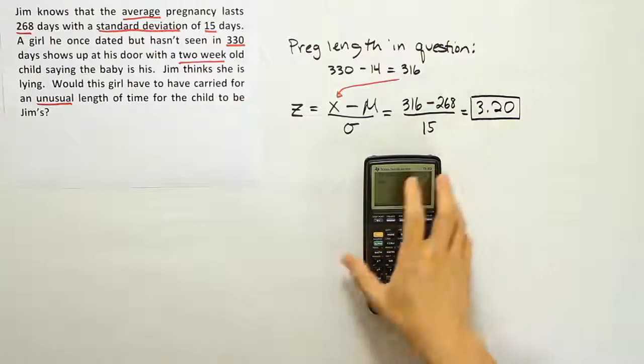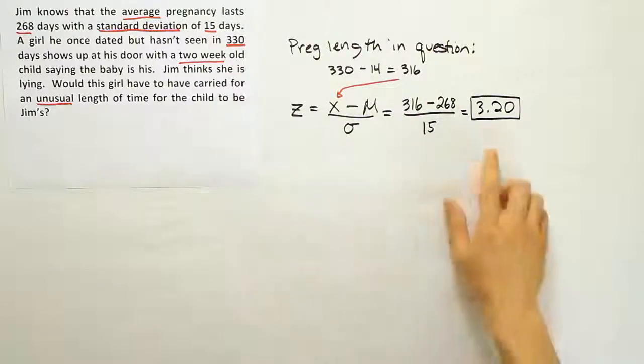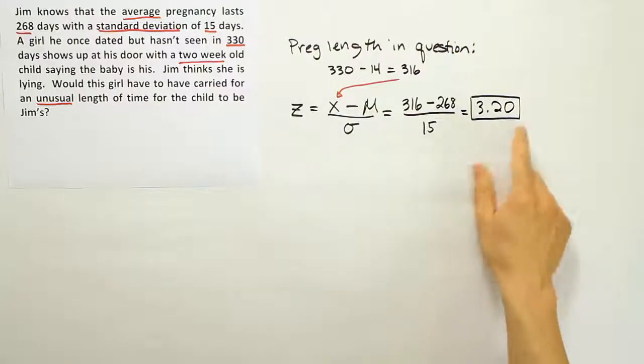And when we look at our scale of what's unusual, we tend to think that 3.2 standard deviations is pretty unusual. That's pretty far above average. So we're going to say that yes, this length of pregnancy is pretty unusual.